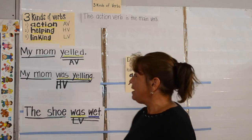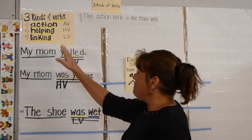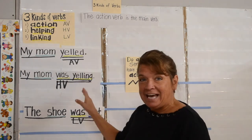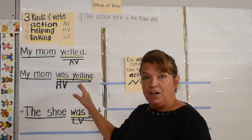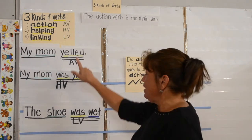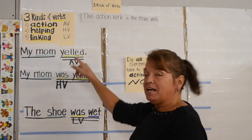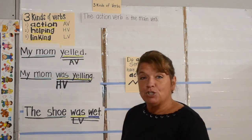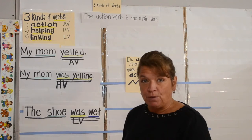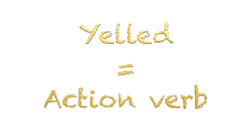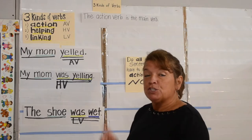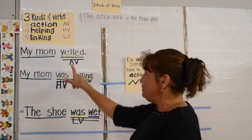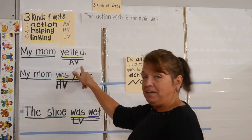Sentence number one: my mom yelled. The verb here is yelled. That is your action verb, so we label it A-V.